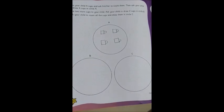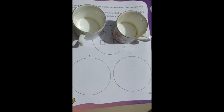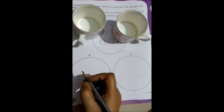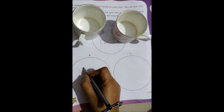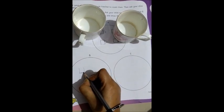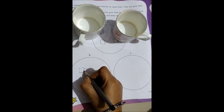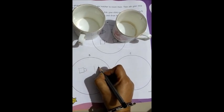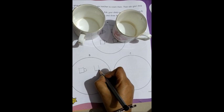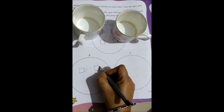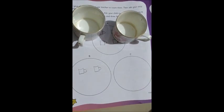Now, what do we have to do next? Give them 2 more cups. So we give them 2 more cups. Now we have given them 2 more cups. Now what do we do? We draw these 2 more cups in circle B. Draw the 2 more cups in circle B: 1 cup and 2 cups. We have drawn the 2 cups in circle B.